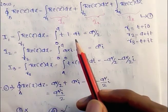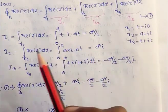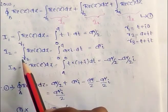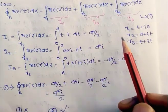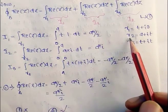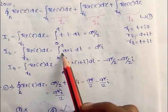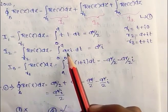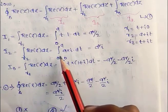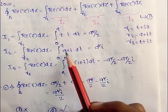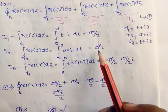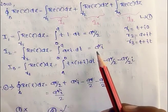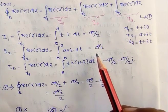Also, I2 equals the integral over gamma 2 of Re(z) dz. The real part of gamma 2(t) is a, and gamma 2'(t) is i. So this integral becomes the integral from 0 to a of a·i dt, which equals a²i. So I2 = a²i.